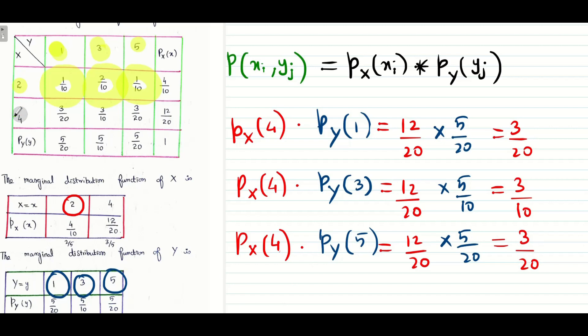Now again for a fixed value of 4, (4, 1) is 3 by 20, (4, 3) is 3 by 10, (4, 5) is 3 by 20. So this is going to be probability of (4, 1), (4, 3), (4, 5).